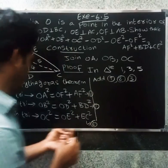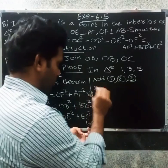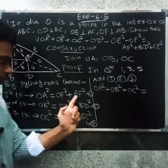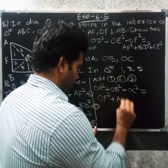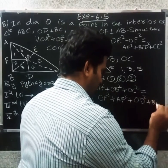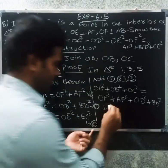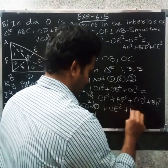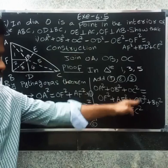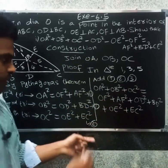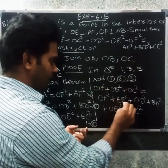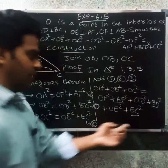Now combining: OA² + OB² + OC² equals OF² + AF² plus OD² + BD² plus OE² + EC². Rearranging, OA² + OB² + OC² minus OD² minus OE² minus OF² equals AF² + BD² + EC². Hence the first proof is shown.